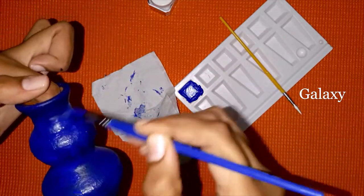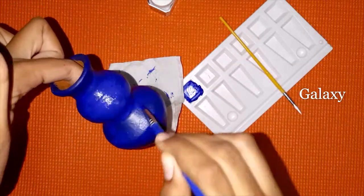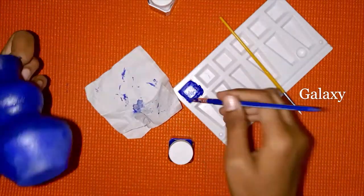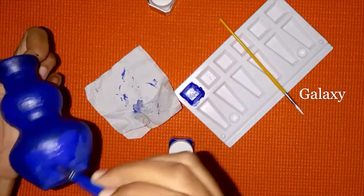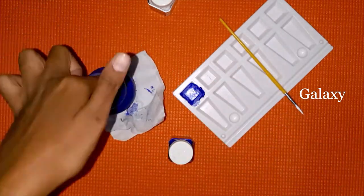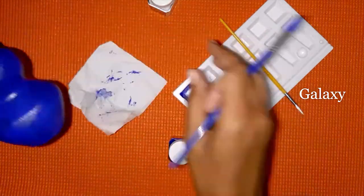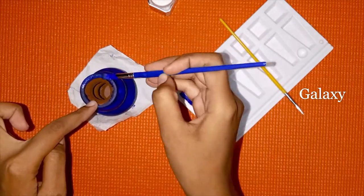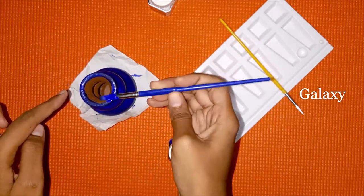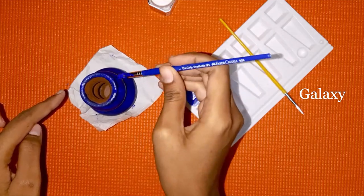If you want more 3D effect, you can mix some red and black also, but I'm using these two basic colors which are easy for painting. Don't forget the neck of the pot. It's very important.